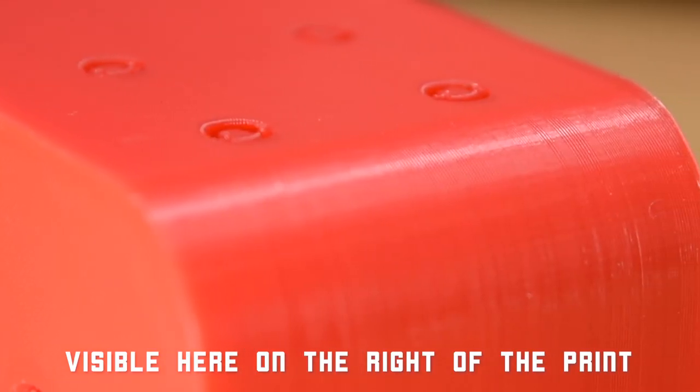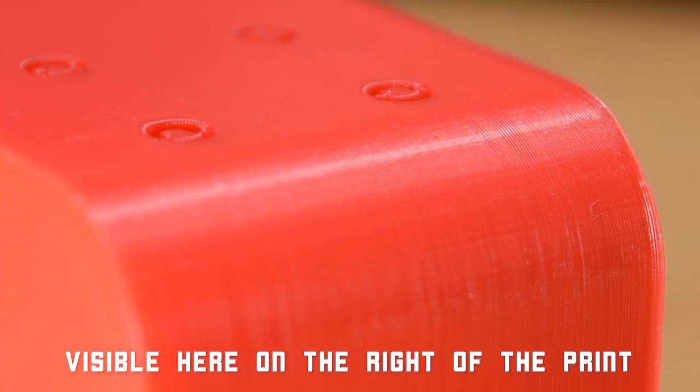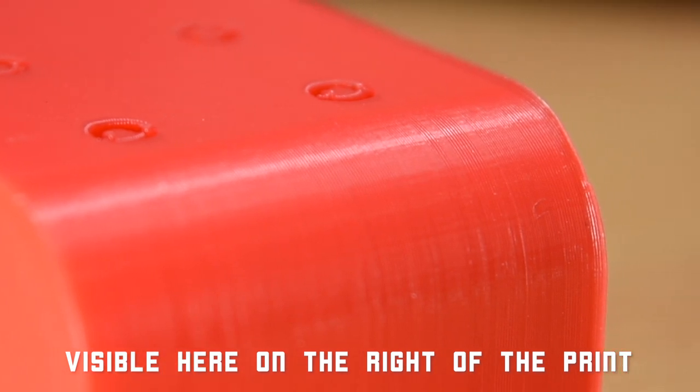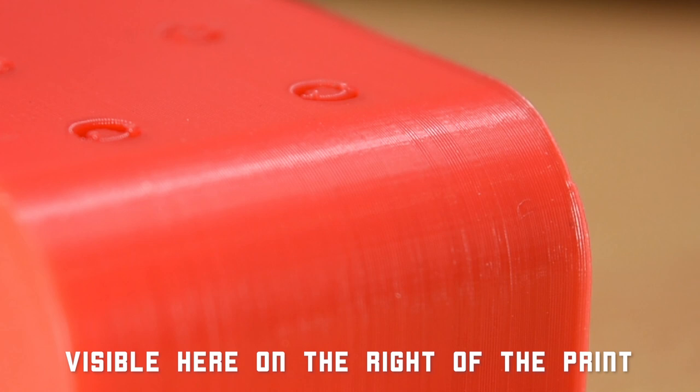For 3D printing, these are useful for removing the elephant's foot effect, where a print splays out ever so slightly on the build plate, leaving a very small rim around the print, which can look bad and if it's a tight fitting part, make assembly difficult.